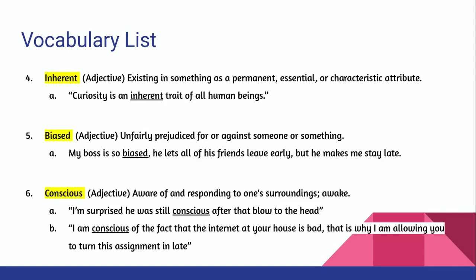Number four is 'inherent,' also an adjective, meaning existing in something as a permanent, essential, or characteristic attribute. Number five is 'biased,' another adjective, meaning unfairly prejudiced for or against someone or something. Number six is 'conscious,' an adjective as well, meaning aware of and responding to one's surroundings, or awake.